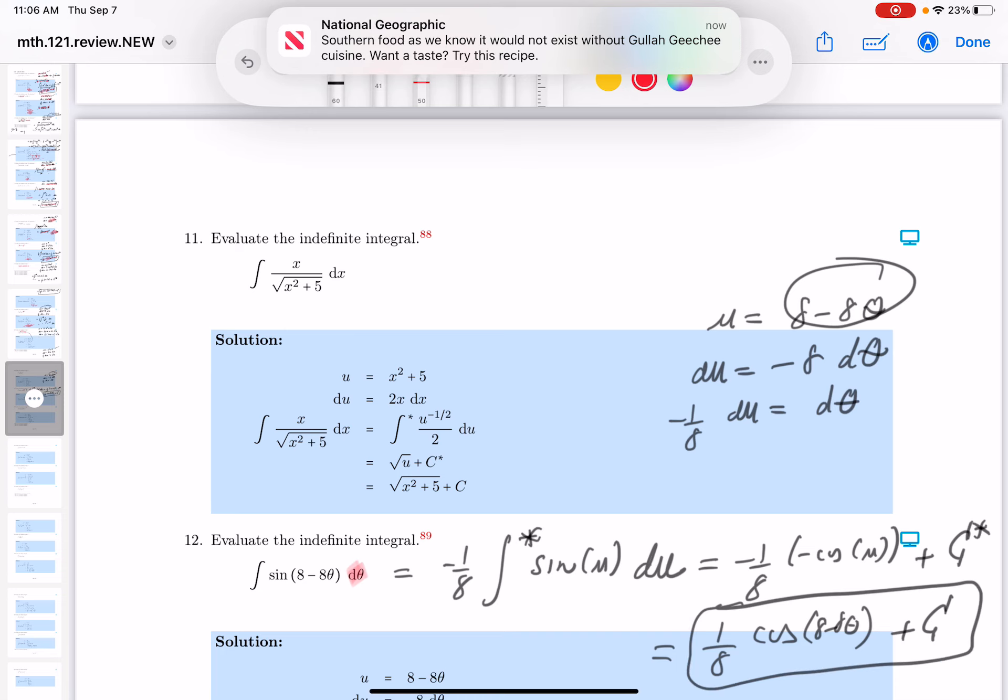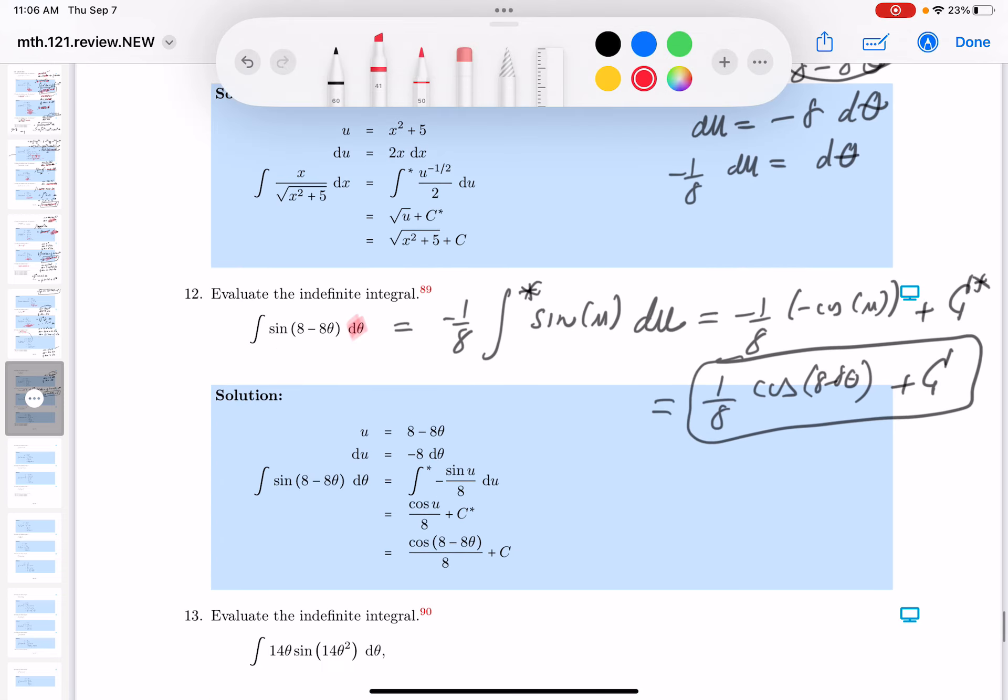Let's look at the key, see if we got it right. And I'm looking at it. I'm seeing the cosine of 8 minus 8 theta. You know, it's 1 eighth of it, plus C. We're good to go to the next question.